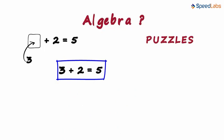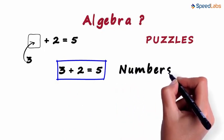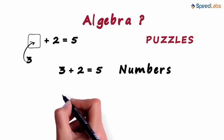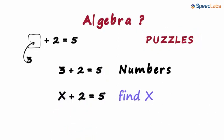This thing we see here contains only numbers. This puzzle can also be asked in a different way. We can say that x plus 2 equals 5, find x.